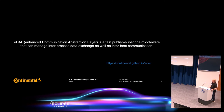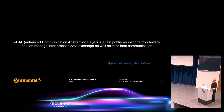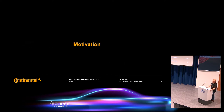eCal — what does it mean? This is the official statement from the eCal homepage: eCal, enhanced communication abstraction layer, is a fast, publish-subscribe middleware that can manage in-process data exchange as well as inter-host communication. That is still true, but this is a very early statement — in the meanwhile, eCal is much more. eCal has an ecosystem and is used widely in other projects for AI and robotics.